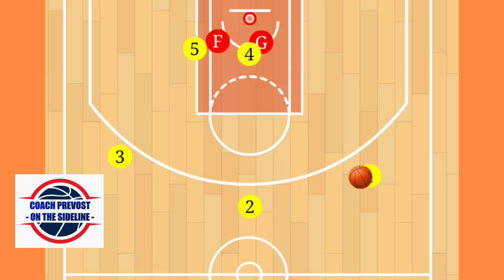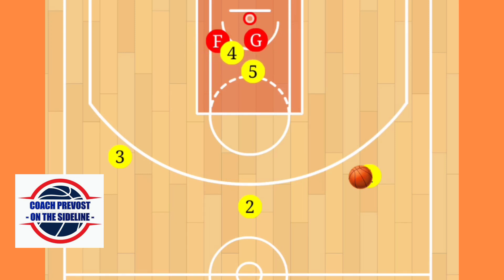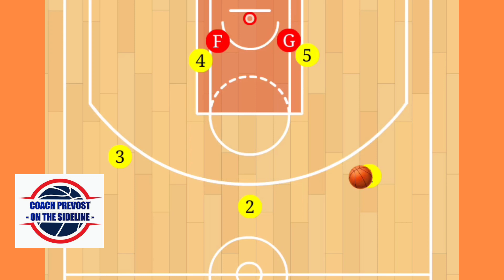We're going to run this play over and over again until we have a clear shot to the basket. There's a lot of screen-aways taking place. Again, we call this one Rockets — it is a motion continuous offense play. Give it a shot with your team and let me know how it goes.